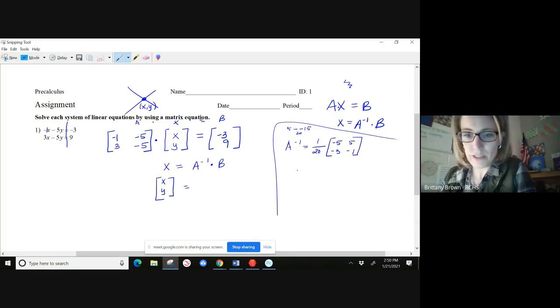Okie dokie. So let's distribute that 1 over 20 through, and let's say negative 5 times 1 over 20 will end up reducing to a negative one-fourth, and then 5 times a 1 over 20 will be a positive one-fourth. Bottom row here, a negative 3 times 1 over 20 would be negative 3 over 20. And then lastly, 1 over 20 times negative 1 would be negative 1 over 20. So there's your inverse.